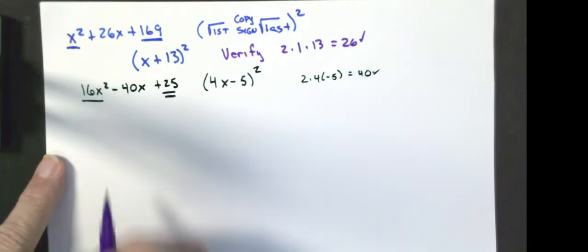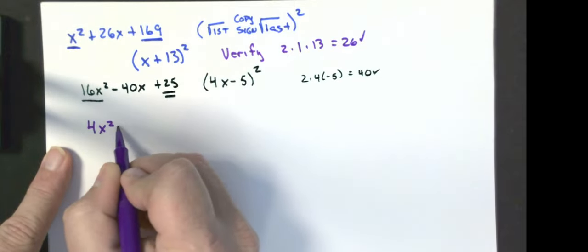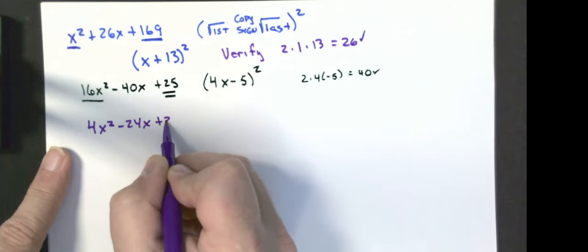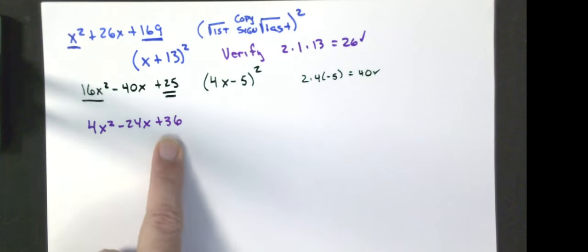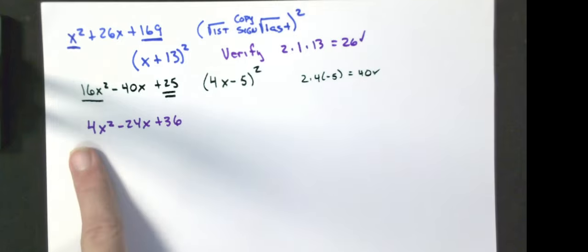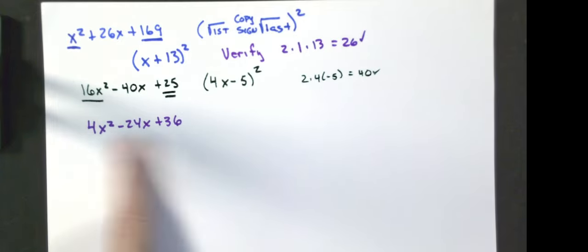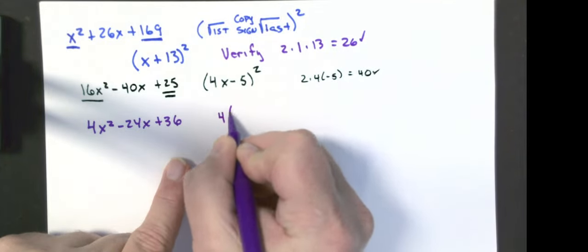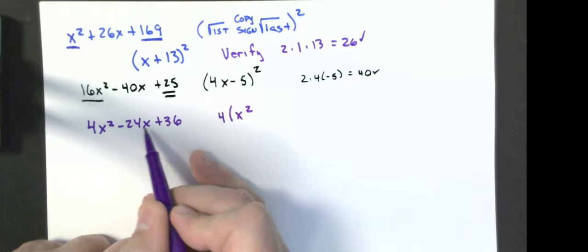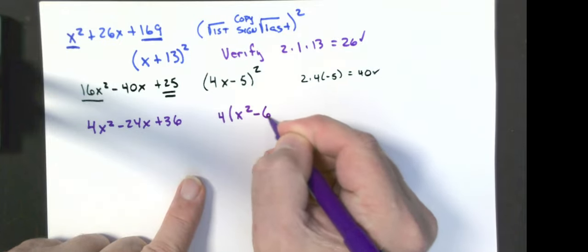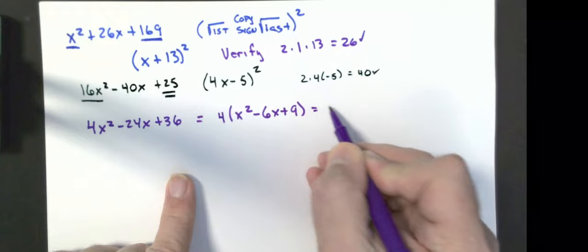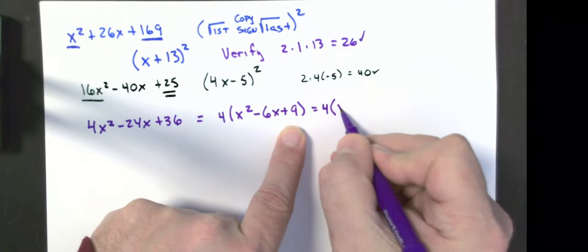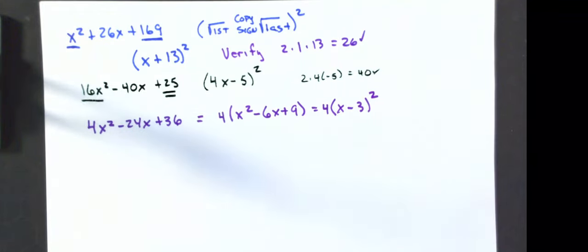Let's do this one: 4x² minus 24x plus 36. The first term is a perfect square, the last term is a perfect square — however, every single term has a factor of 4, so I want to pull out that greatest common factor first. 4 divided by 4 is 1, giving x²; negative 24 divided by 4 is minus 6x; 36 divided by 4 is plus 9. Now I apply the perfect square trinomial pattern: square root of the first, square root of the last, copy the sign, all squared — giving 4 times (x minus 3)².